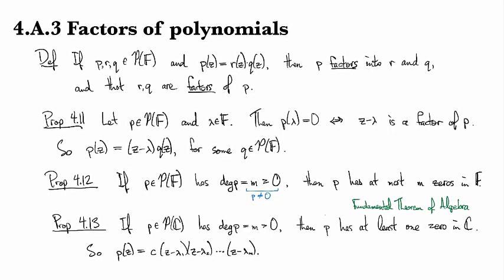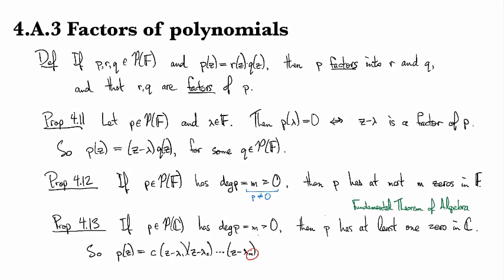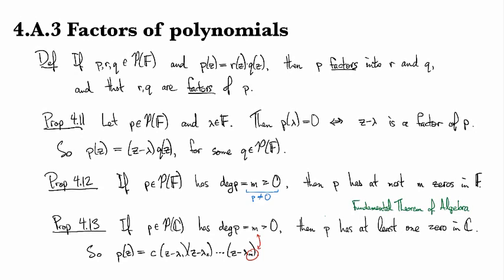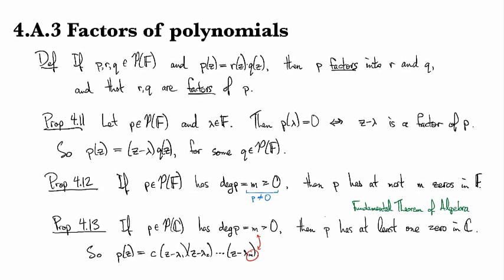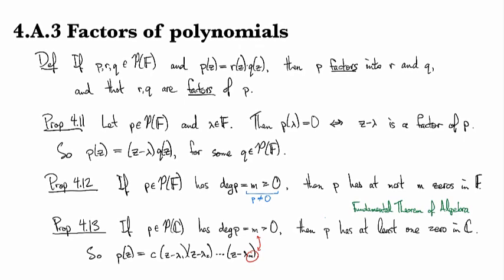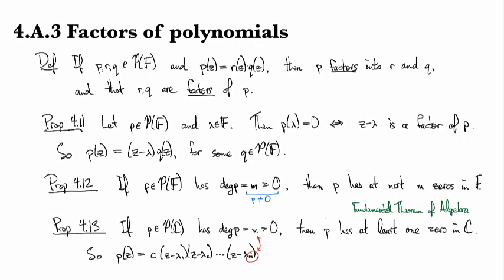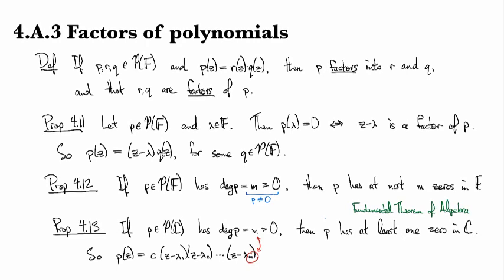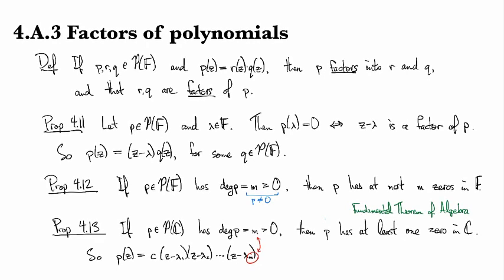And I should highlight right here that this M right here is non-coincidentally the same as that M right there. So if P is a polynomial over C with degree M, then it has M zeros in C.